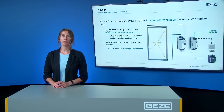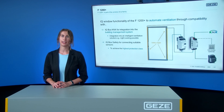Due to the maximum opening width of less than 200 mm, the F1200 Plus already fulfills Protection Class III according to the Machinery Directive. In combination with the IQ Box Safety and corresponding sensors, Protection Class IV can be realized, meaning the main and secondary closing edges are adequately protected in automatic mode. Protection Class IV is primarily required in buildings where persons requiring special protection are located.